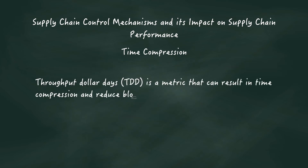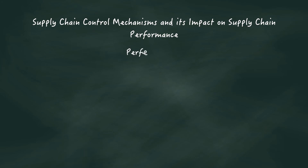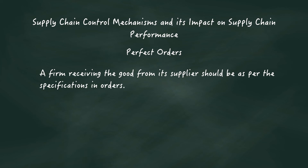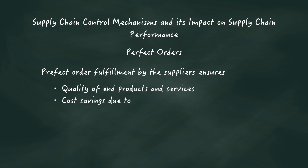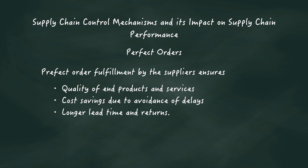Throughput dollar days is a metric that can result in time compression and reduce blockages across the supply chain. Perfect orders: a firm receiving goods from its suppliers should receive them as per the specification in the orders. Perfect order fulfillment by suppliers is the beginning of effective supply chain performance as it ensures the quality of end products and services, with cost savings due to avoidance of delays, longer lead time, and returns.